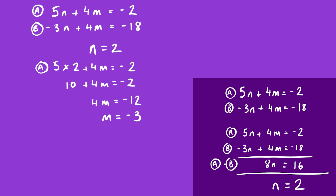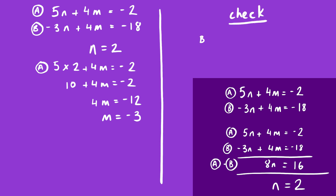We must check that by substituting back into B: −3 × 2 + 4 × (−3) should give −18. That's −6 + (−12) = −18. So we've done it correctly.